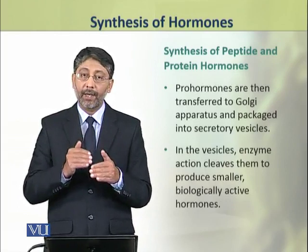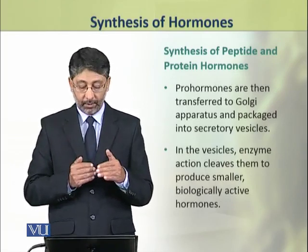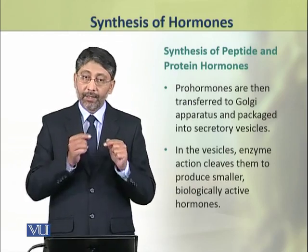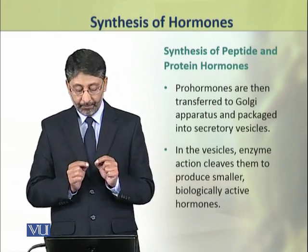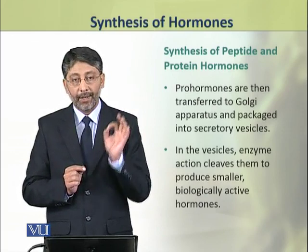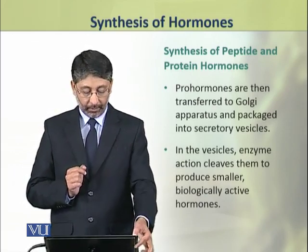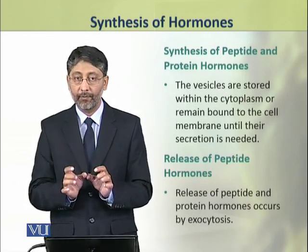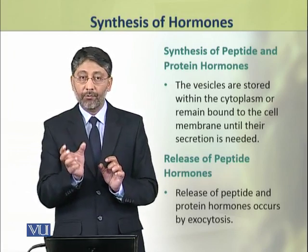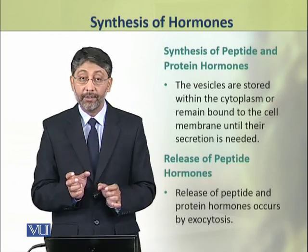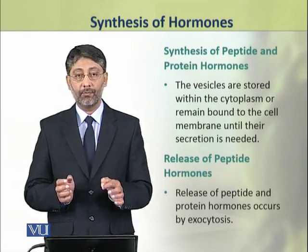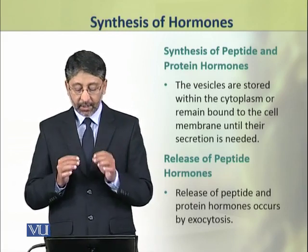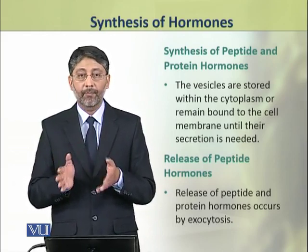These pro-hormones are then transferred to the Golgi bodies, where they are packaged into secretory granules. Inside the secretory granules, there are certain enzymes which further cleave them and produce smaller active hormones. These vesicles with active hormone are stored within the cytoplasm. They remain bound with the plasma membrane and are released when required. The release of peptide hormones occurs by exocytosis.